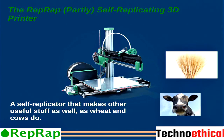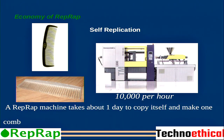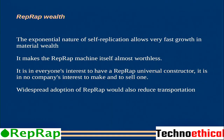This RepRap project is self-replicating as well, as wheat and the cow does — the cow does the milk for us. This is an example of industrialization. A RepRap can basically replicate itself in 24 hours, and in those 24 hours can also give us a comb. So exponentially, in about three months, we can have a RepRap for every person on earth, also diminishing the need for transportation and waste.